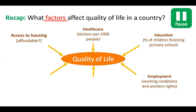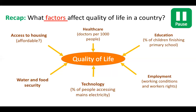Employment links closely to education — consider working conditions and workers' rights. Technology is also important: having mains electricity, being able to turn on lights, boil a kettle, or keep food safe in a fridge is not the reality for many people in developing countries. Internet access and mobile phones fall into this category too. Finally, water and food security — access to safe, affordable, and consistent food and clean water that won't cause illnesses like cholera or dysentery — is a really big issue.